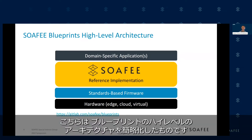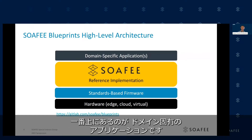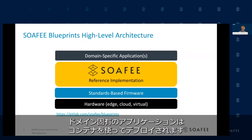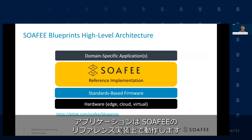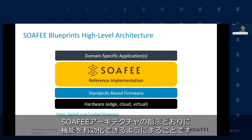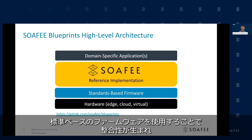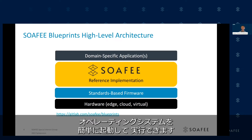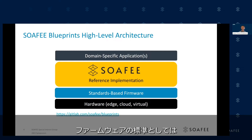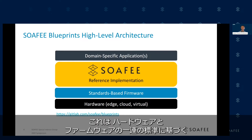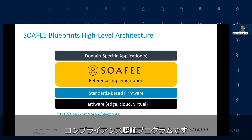Here we can see a simplified view of a high-level architecture of a blueprint. Starting from the top, we have the domain-specific application. In this context, domain-specific refers to some software which performs a certain task. The domain-specific applications are deployed using containers. The applications run on top of a SOFI reference implementation. The requirement for the reference implementation is that it enables the features which the SOFI architecture dictates. Using standards-based firmware creates alignment and allows a user to easily get an operating system up and running on any type of hardware which follows the firmware standard. An example of a firmware standard is ARM's system-ready program, which is a compliance certification program based on a set of hardware and firmware standards.